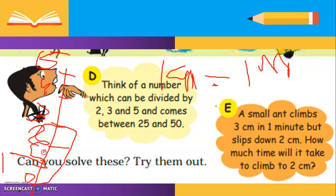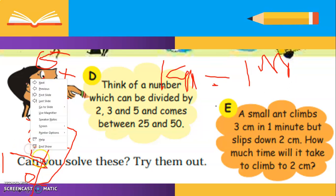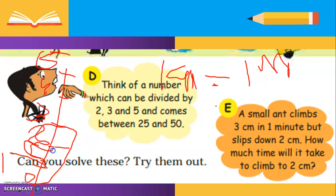the ant is at 1 cm and is again climbing 3 cm. So 2 cm, 3 cm, 4 cm - after 3 steps it reaches 4 cm but it is coming down to 2 cm. So 4 minus 2, it comes down to 2 cm.